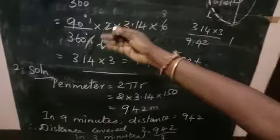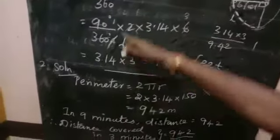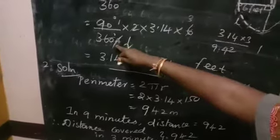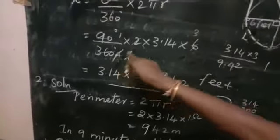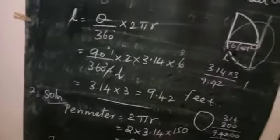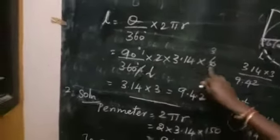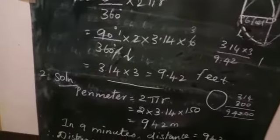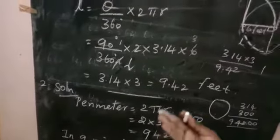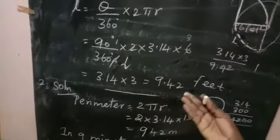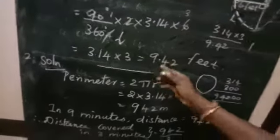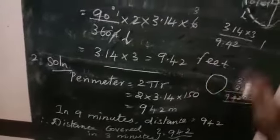1 into 90 is 90, 4 into 90 is 360. Then again cancel 4 and 2: 2 times 2 is 4, 1 times 2 is 2. Then cancel 2 and 6: 1 times 2 is 2, 3 times 2 is 6. So the balance numbers are 3.14 and 3. We multiply these numbers to get 9.42 feet.